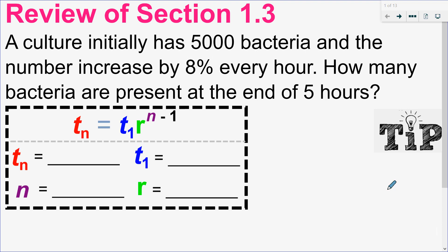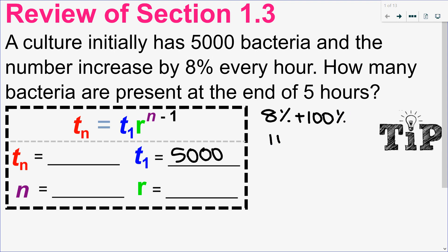Hello, Matthews Gatos here. In this video we'll cover section 1.4, but before we do that let's review section 1.3. In this question we have a culture of bacteria — we start initially with 5,000 bacteria and the number increases by 8% every hour. That's 8% plus what we started with, so it's 108% from term to term, giving a ratio of 1.08.